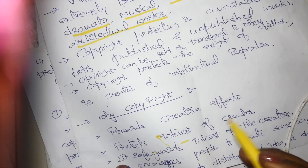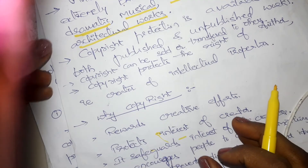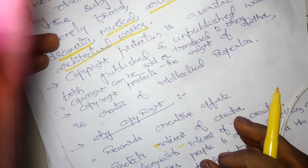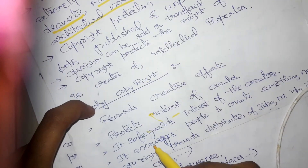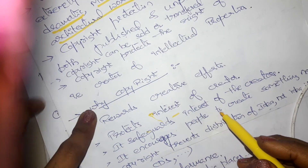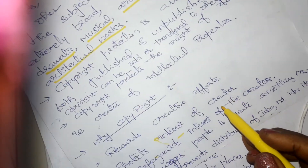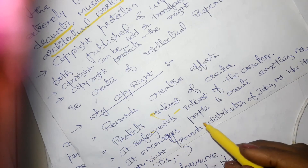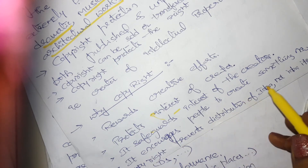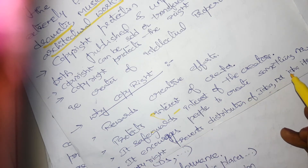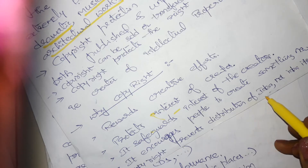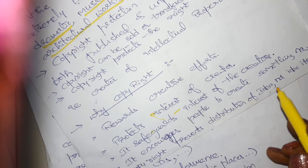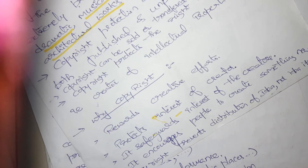Copyright protects and safeguards the interest of the creator. It encourages people to create something new. Copyright prevents distribution of an idea, not the idea itself.